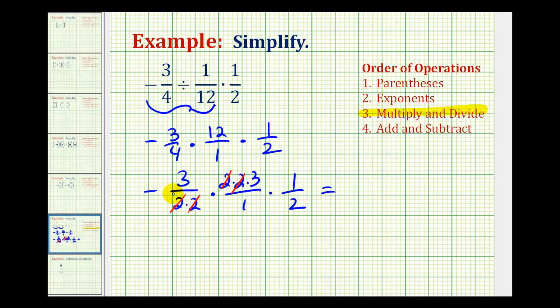Notice we have a negative times a positive times a positive, so the product will be negative. The numerator will be three times three, which is nine. And the denominator will be one times two, which is two.